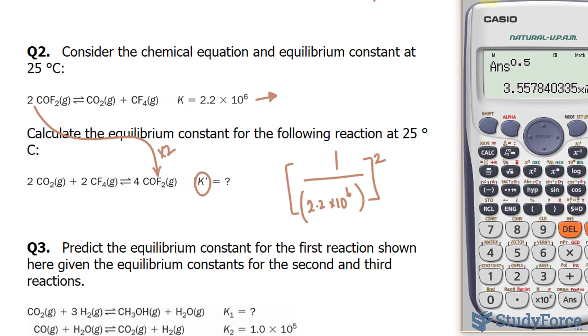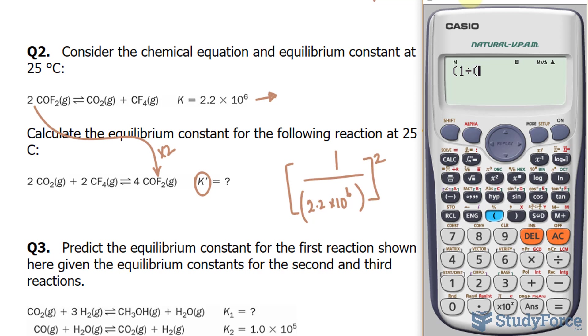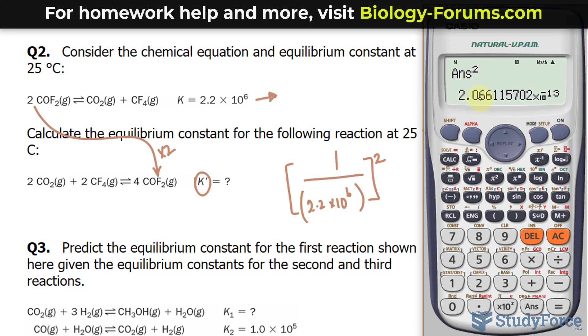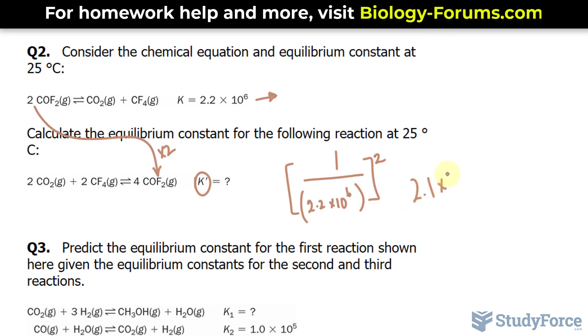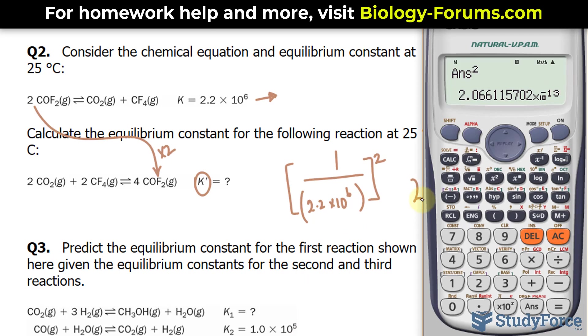So using our calculator, 1 over 2.2 times 10 raised to the power of 6. Close, close. Now we raise this to the power of 2. And we end up with 2.06 to two significant figures. 2.1 times 10 to the power of negative 13.